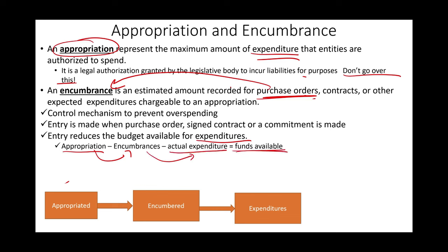Example: the city clerk's office ordered a copier for $2,000 on January 2nd. They placed an order — debit Encumbrances $2,000, credit Reserve for Encumbrances $2,000. They have not purchased it yet; they may have ordered it online or talked to the salesperson. Once you place that order, you remove $2,000 from the appropriation amount so no one will use this money — it is no longer available. The net effect is zero, but you have reduced the appropriation.